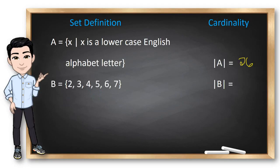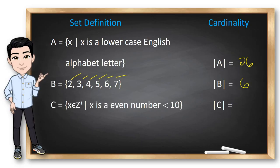How about this set? All you need to do is to count the elements. 1, 2, 3, 4, 5, 6. So, the answer here is 6.